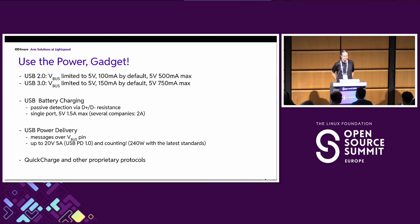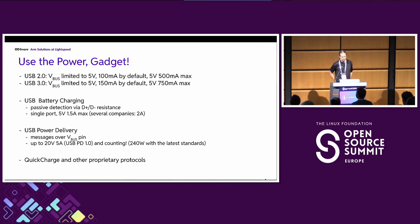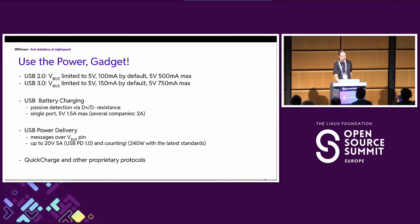Some companies, Qualcomm being one of them, decided that wasn't good enough and created proprietary protocols. Some of you know Quick Charge, which went through several revisions. It was super secret in the beginning, got reverse engineered, and used resistances attached to D-plus D-minus. That adds additional effort to ensure nobody's device blows up — because if you expect five volts and you get 20, that can be damaging.